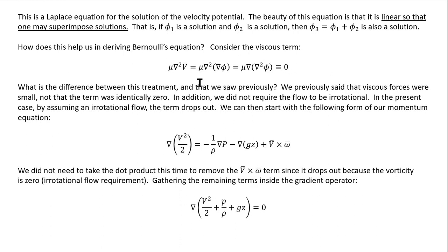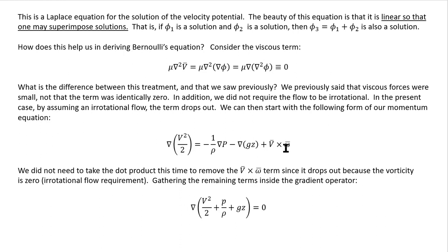The key difference from the previous treatment: previously we said viscous forces were small — not that the term was identically zero — and we didn't require irrotational flow. Here, by assuming irrotational flow, the viscous term drops out exactly. We now start from the momentum equation with that term gone. We don't need to take the dot product to remove the del cross v term because omega equals zero, so it falls out naturally.